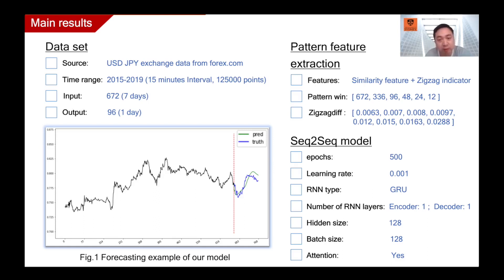Thanks, Haoyu. Now, I just want to talk about the main results of this study. The model is trained on the five-year US dollar to Japan yen forex trading data from 2015 to 2019. The loss function we use is a weighted RMSE, and the patterns are six layers of DTW-based similarity and eight layers of zigzag-based peak and valley features. With other parameters set as shown in this page, peak one shows a selected forecasting example of this model.